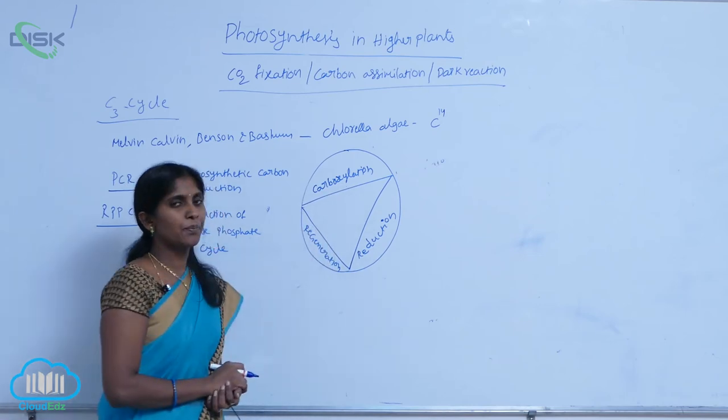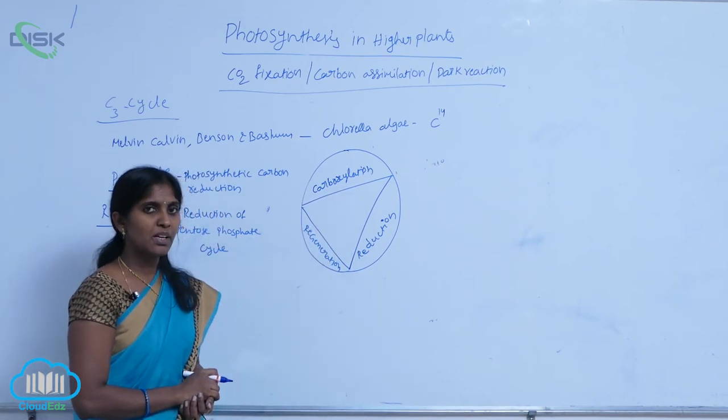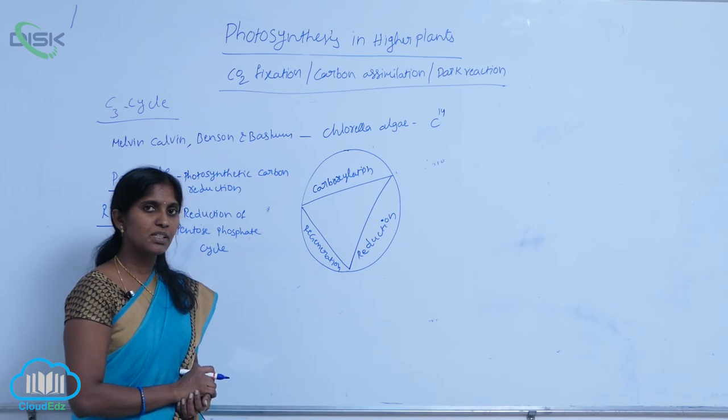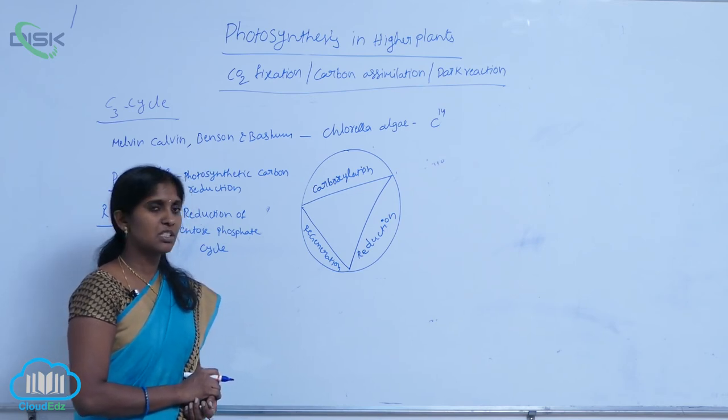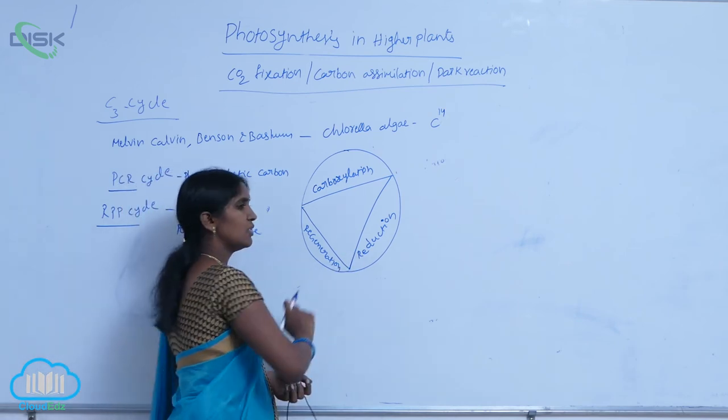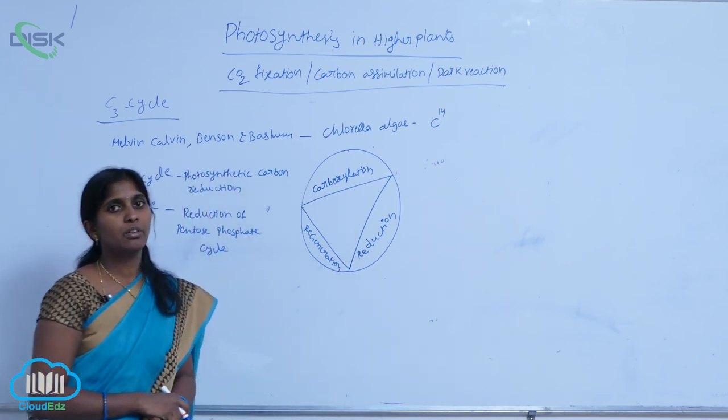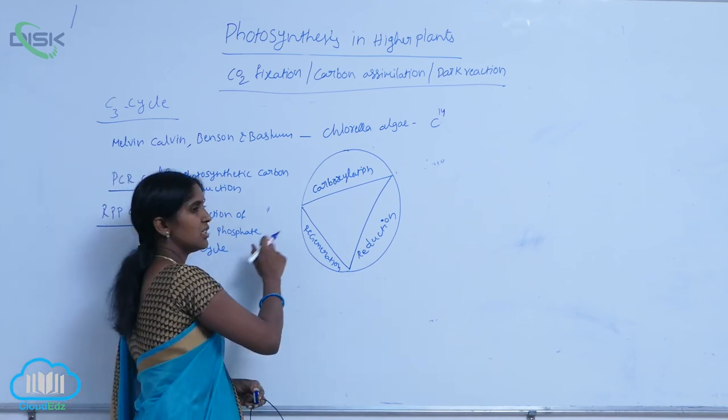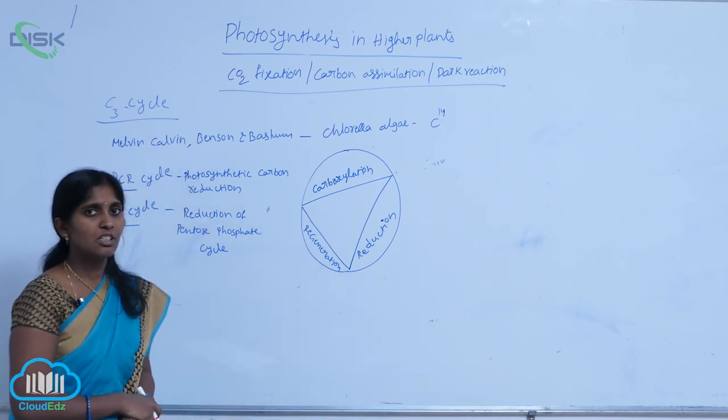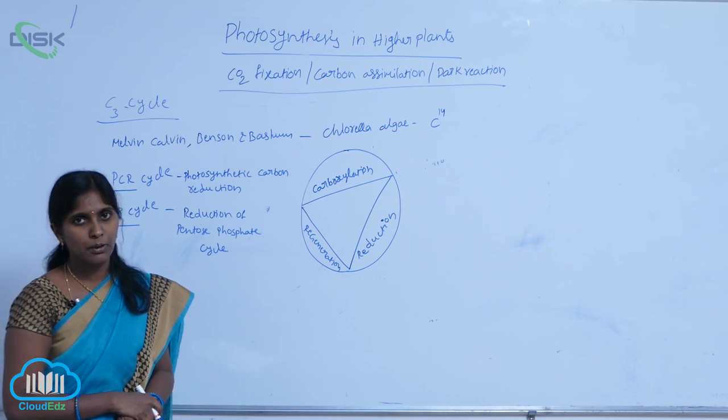Carboxylation involves the absorption and fixation of carbon dioxide and formation of the first intermediate compound, PGA. Reduction produces glucose, and regeneration regenerates RUBP.